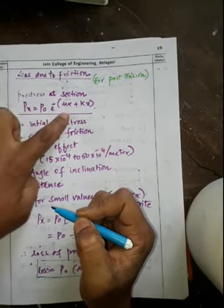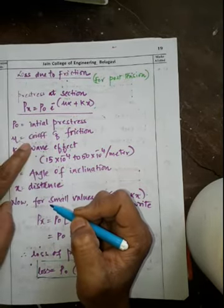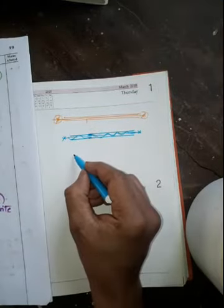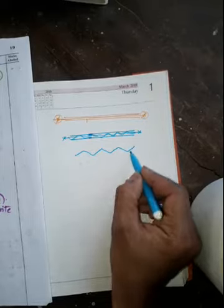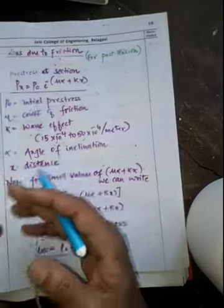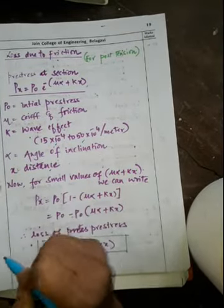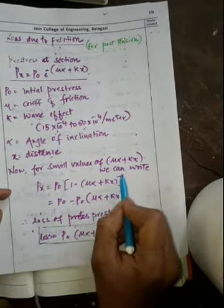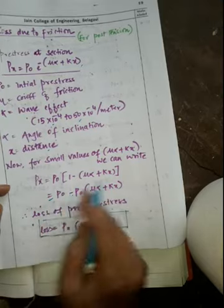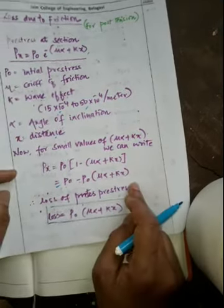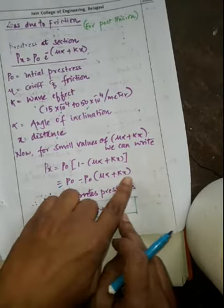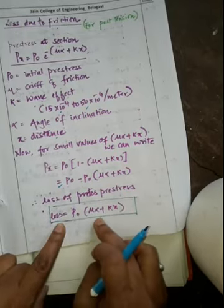Here, P₀ is initial pressure, μ is the coefficient of friction, k is the wave effect coefficient, α is the angle of inclination, and x is the distance. For small values of (μα + kx), we can write P_x = P₀ × (1 − (μα + kx)), so the loss = P₀ × (μα + kx).